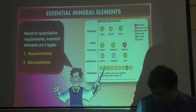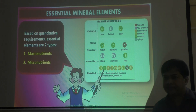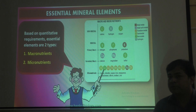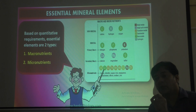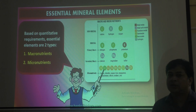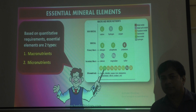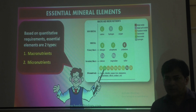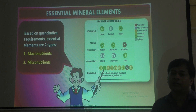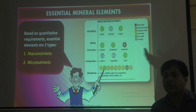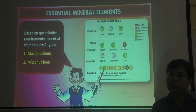Today we will discuss that minerals are of two types based on the quantity in which the plant requires them. If a plant requires minerals in very small quantity, then they are micronutrients — micro means small. If the plant requires them in large quantity, then they are macronutrients — macro means large or more.